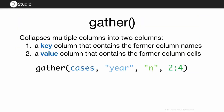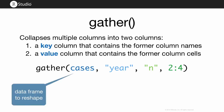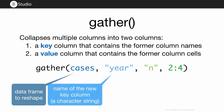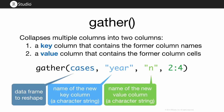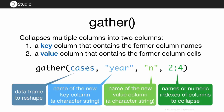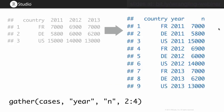The gather function comes from the tidyR library. You first give it the name of the data frame you want to clean up. Then you give it the name you want for the key column and the name for the value column. Here we're moving column names that were years into the key column and cell values that were counts into the value column. Finally, you tell gather which columns to use — in the cases data frame, the first column is already tidy, so we leave column 1 and include columns 2 through 4.